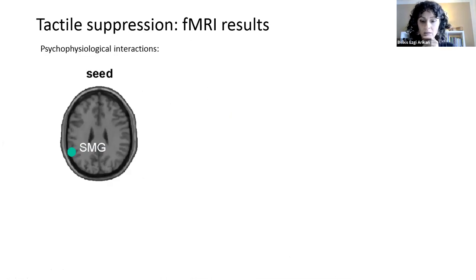We also used PPIs to assess changes in coupling between different areas that are associated with the processing and integration of somatosensory signals. For this, we chose the supramarginal gyrus.